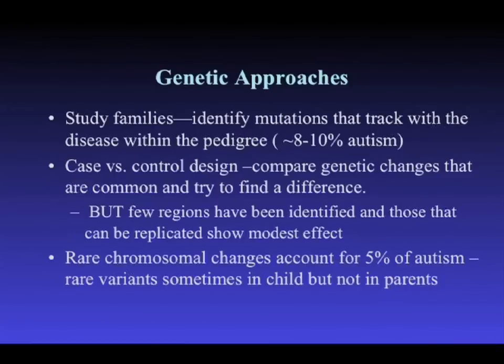About 8% to 10% of autism falls under these more syndromic Mendelian forms — tracked to a specific gene or locus within a given family, with convincing evidence replicated in multiple studies that these are in fact causative.